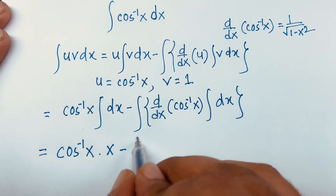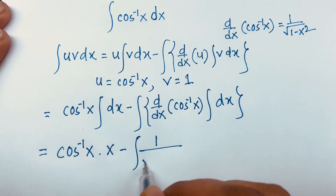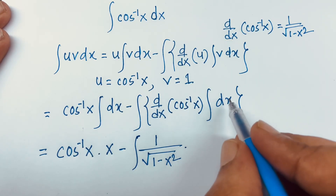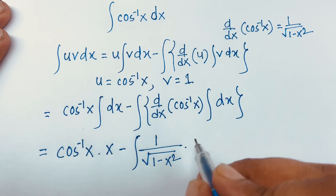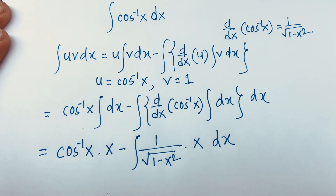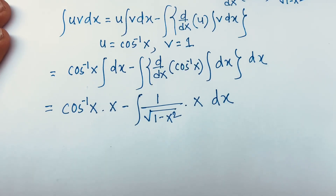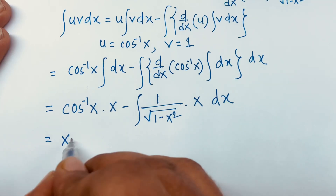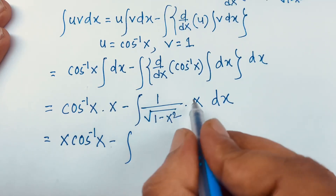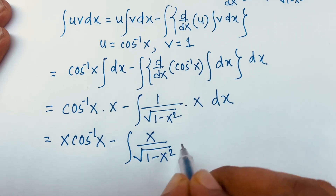And here is the integral of v dx — v is 1 — so here is dx. So this equation becomes: x times cosine inverse x, minus the integral of x times 1 over square root (1 minus x squared), and here is dx.